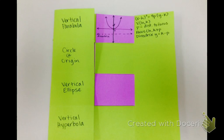In this first step I have a picture of a vertical parabola opening up with the vertex, focus, and directrix labeled. And then I wrote the equations out to the side.